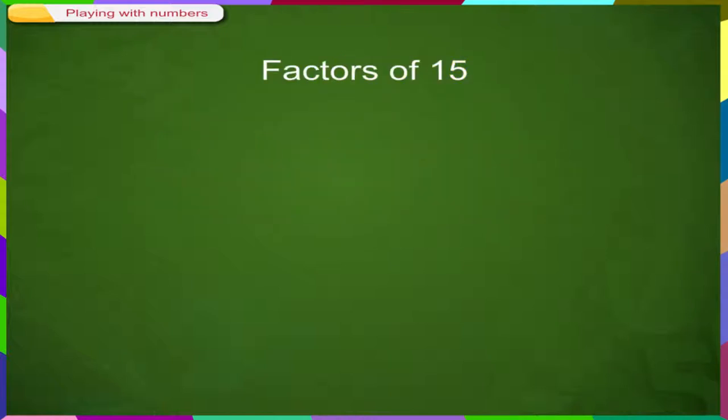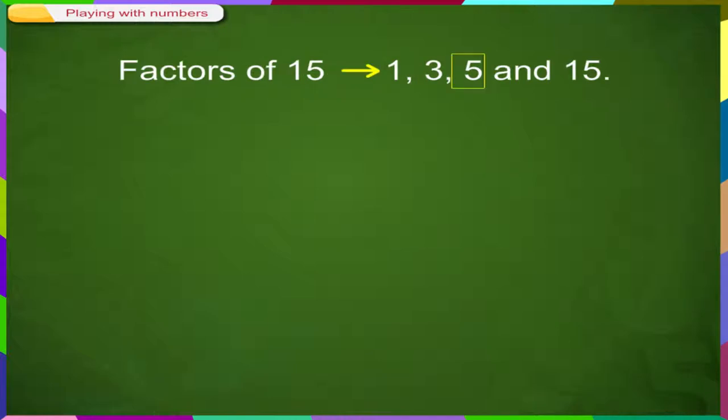Factors of 15 are 1, 3, 5 and 15. The number 1 is the smallest factor of 15. And the number itself, i.e., 15 is the biggest factor of 15.